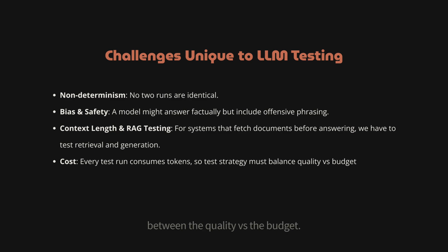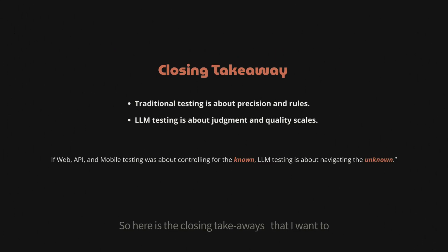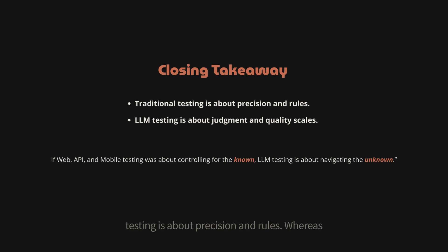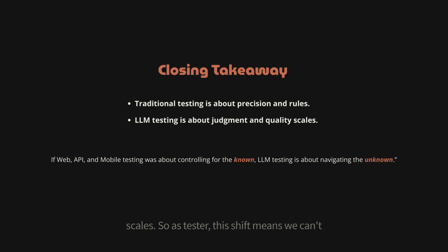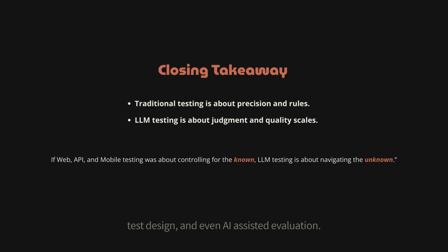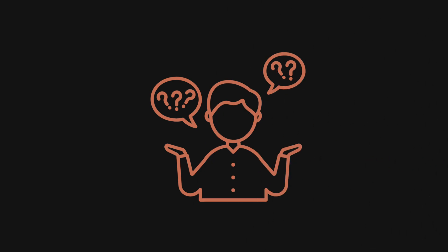The key closing takeaway is that traditional testing is about precision and rules, whereas LLM testing is about judgment and quality. As testers, this shift means we can't just rely on assertions and automation scripts — we need to bring in human review, creative test design, and even AI-assisted evaluation. If web API and mobile testing was about controlling the known, then LLM testing is about navigating the unknowns.